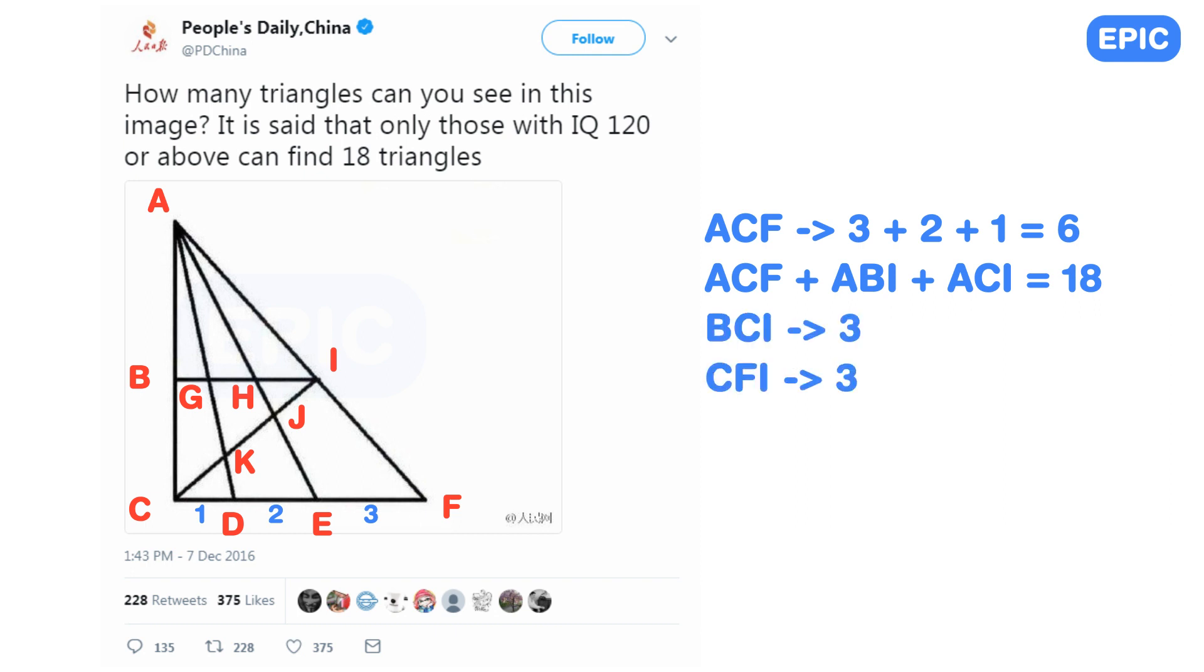Similarly, CFI will also have 3 triangles. Thus, we will have a total of 18 plus 6 equals 24 triangles.